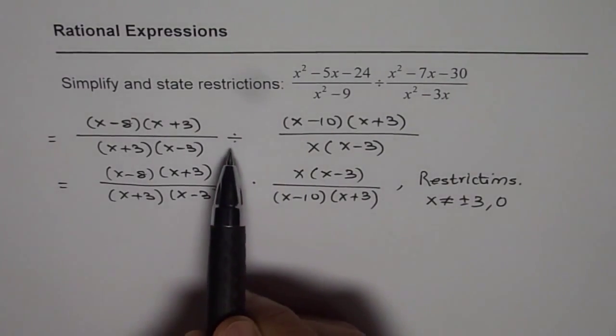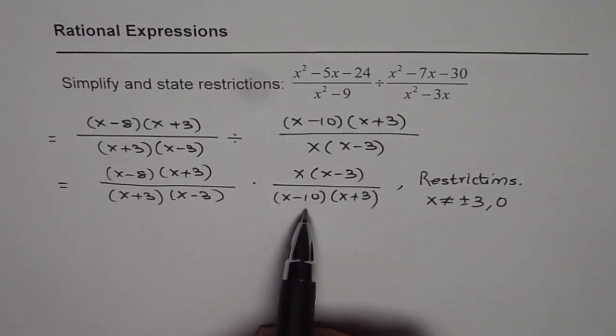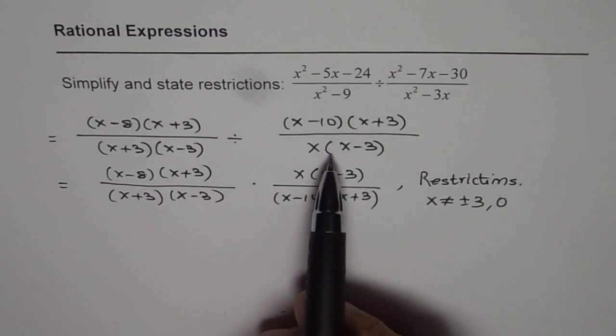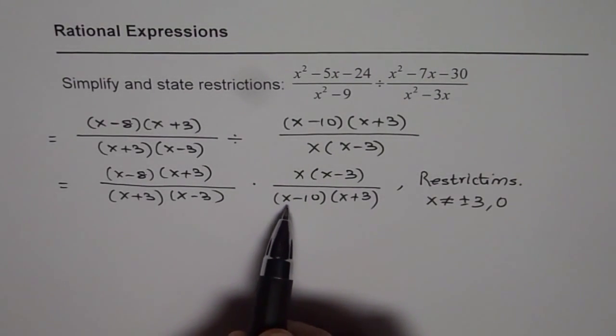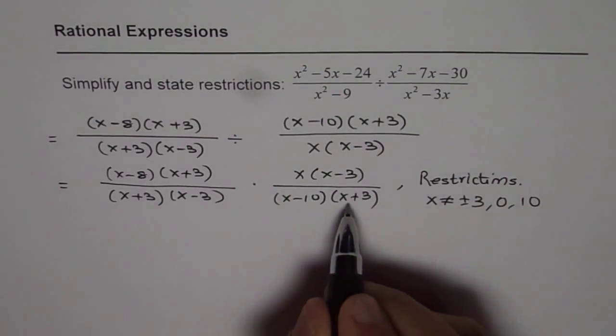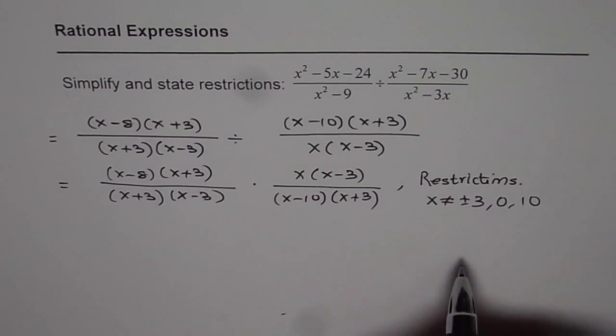When we convert division to multiplication, the numerator comes in the denominator. And that is the reason why, for the divisor, we have to find restrictions from both numerator and denominator. This will give us additional restrictions of x is not equal to 10. Minus 3 is already included. So, we have 4 restrictions for the given rational expression.